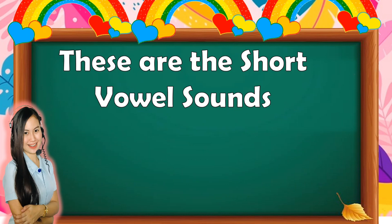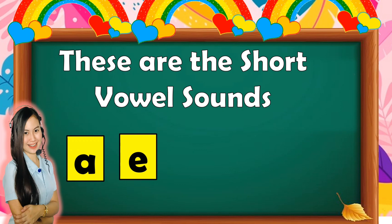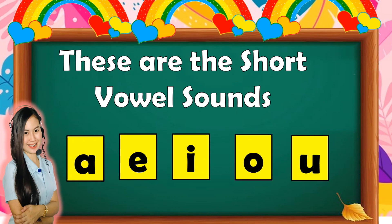These are the short vowel sounds. Letter A, the sound is A. Letter E, the sound is E. Letter I, the sound is I. Letter O, the sound is O. Letter U, the sound is U.